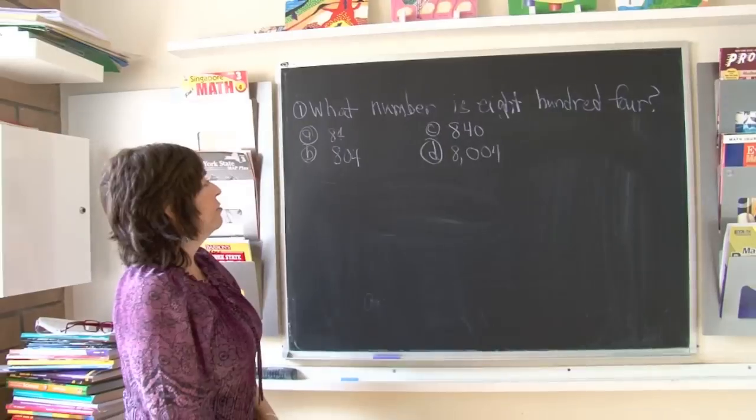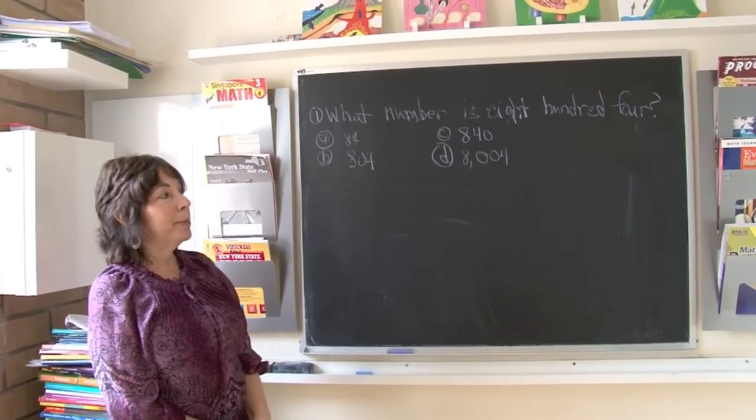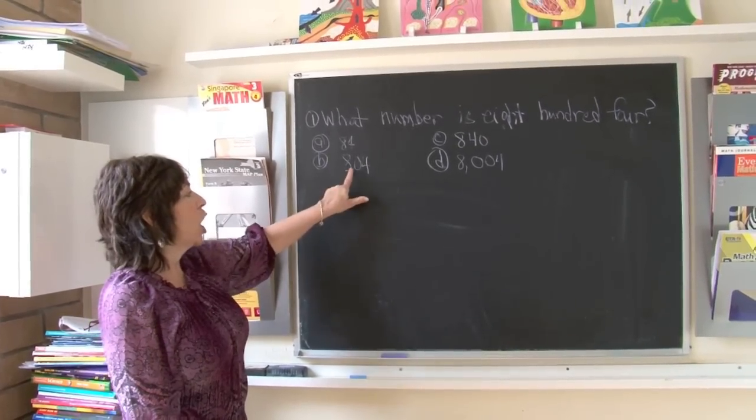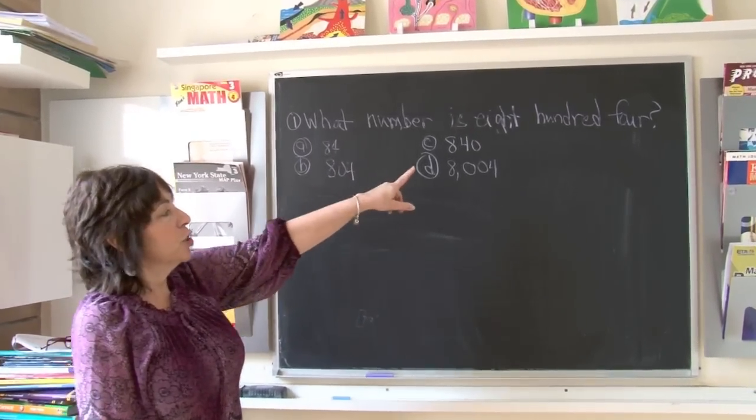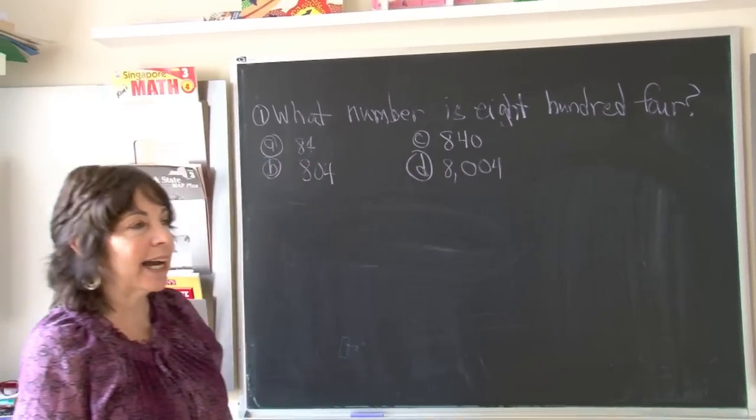B says—B is our answer, 804. Because nowhere in 804 was there a tens column.